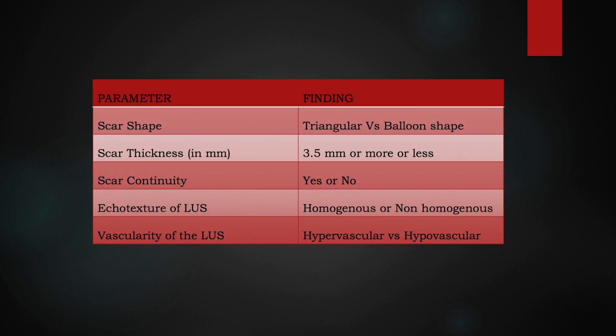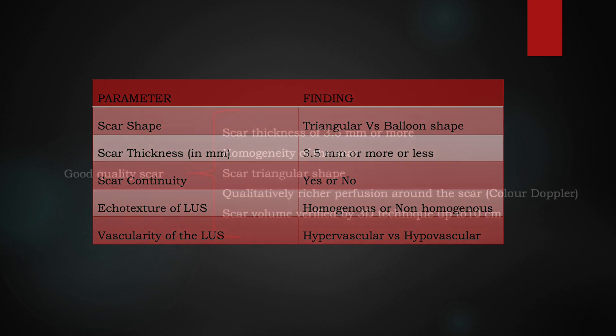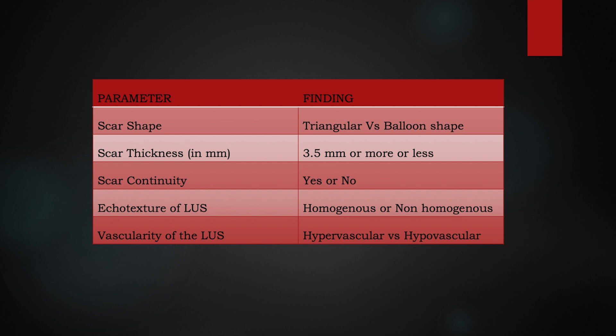What are we looking for? We look at scar shape, which can be triangular or balloon-shaped. Triangular is the normal shape; balloon-shaped is when the membranes are bulging out. Scar thickness of 3.5 mm or more is considered normal and optimal. We also assess scar continuity, whether it is present or not, and look for a homogeneous or non-homogeneous scar. A homogeneous scar is more normal, while a non-homogeneous scar has a higher propensity to rupture.